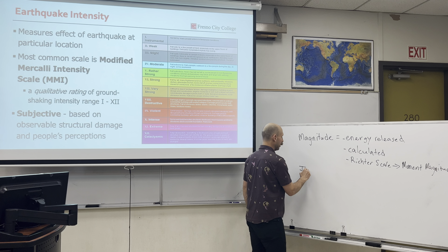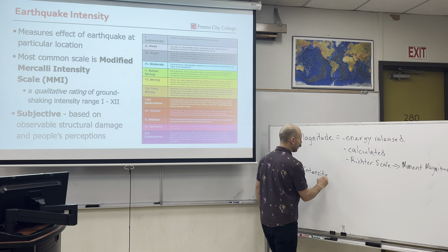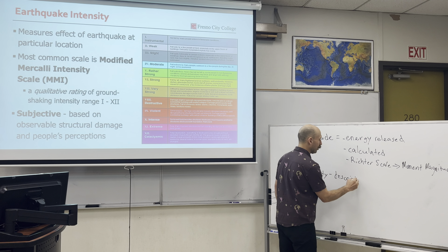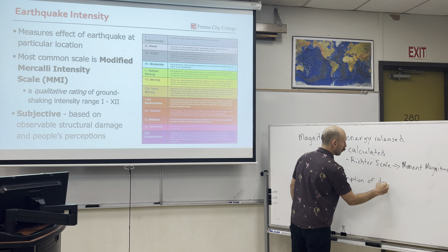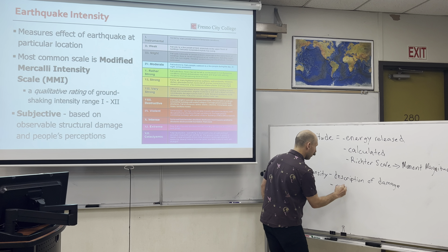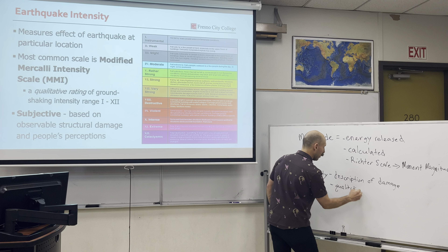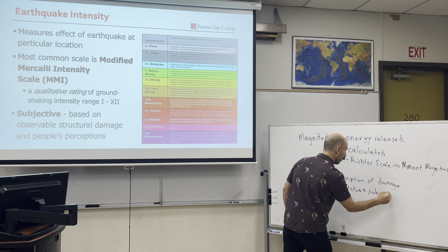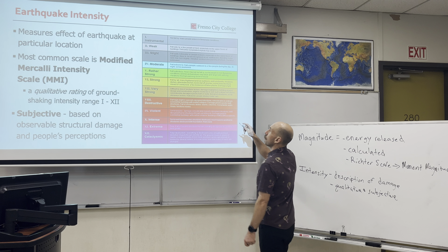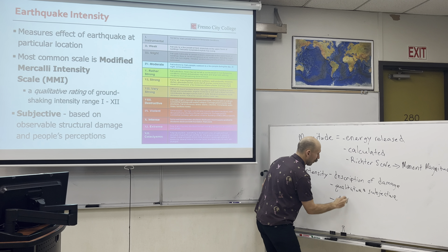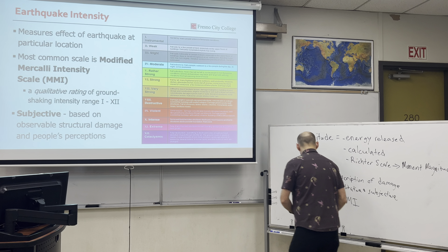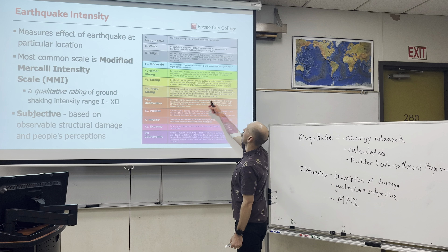Now we're going to get into intensity. Intensity is a description of damage — it is qualitative and subjective. We use the Modified Mercalli Intensity scale, the MMI, which goes from one to twelve. A one means an earthquake occurred but nobody knows it; a twelve means total destruction — everything is destroyed, lines of sight and level are distorted, the ground surface has actually changed shape, and rivers are changed. These are the worst of the worst.